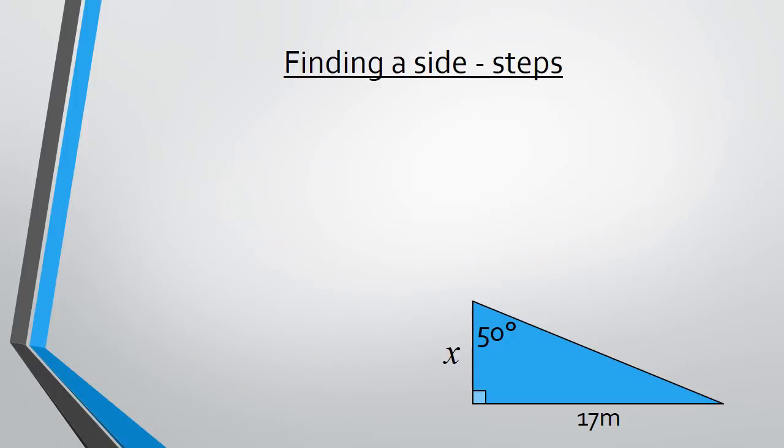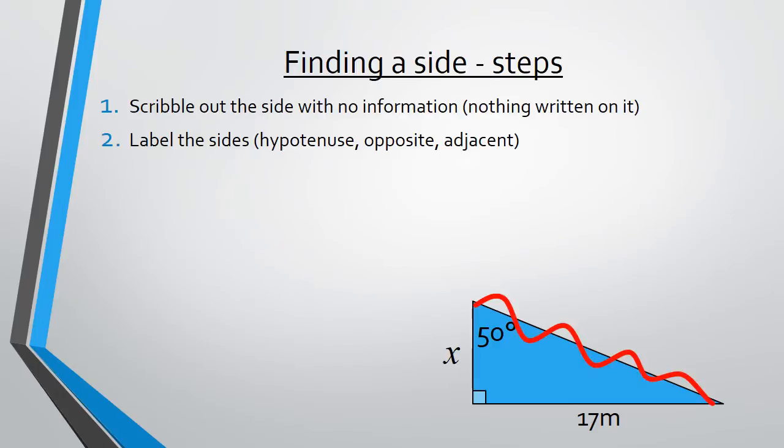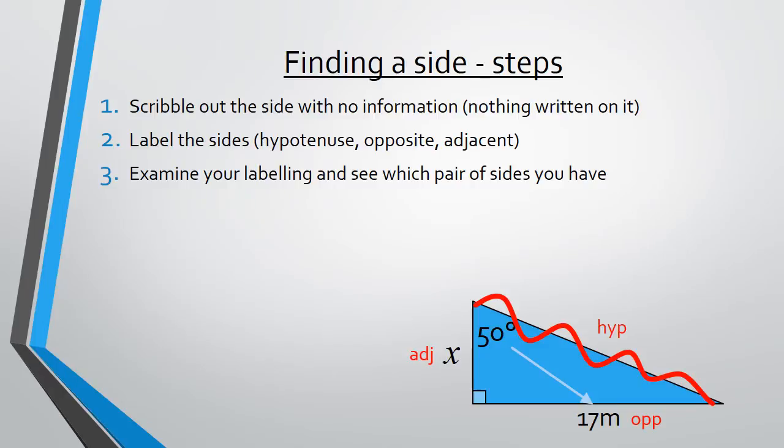The steps that we're going to take today in finding a side are very similar to the steps that we took in the last lesson, where we found the length of a side with the pronumeral on top. We're still going to scribble out the side with no information written on it. We're still going to label the sides, hypotenuse, opposite and adjacent. Same as we've been doing. And we're going to examine these sides and see which pair of sides that we have. So the hypotenuse is not the side we're interested in. So we're interested in opposite and adjacent.